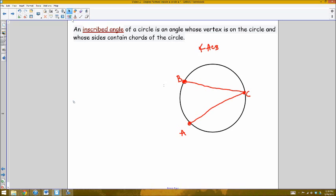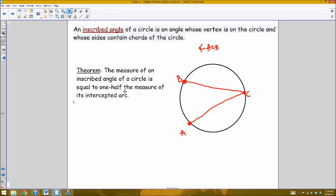The measure of an inscribed angle is equal to half the measure of the arc it intercepts. So in this case, the measure of angle ACB is one half the measure of arc AB.